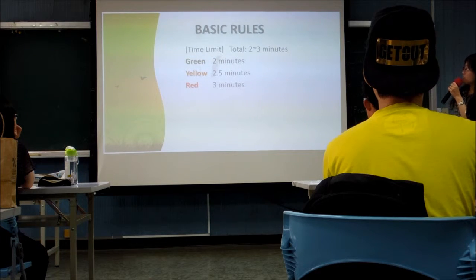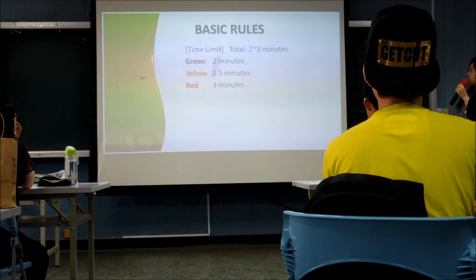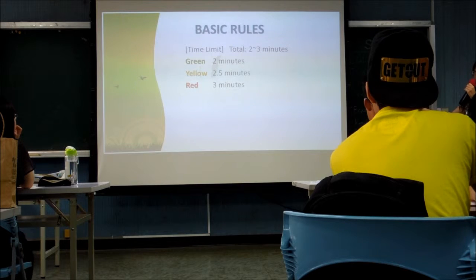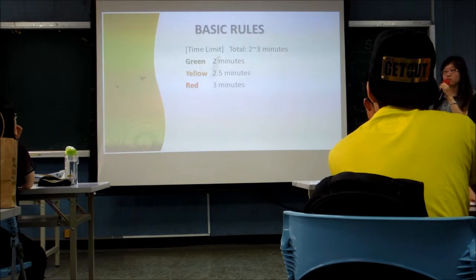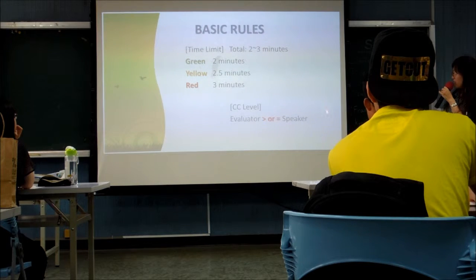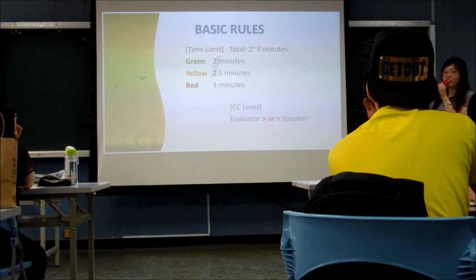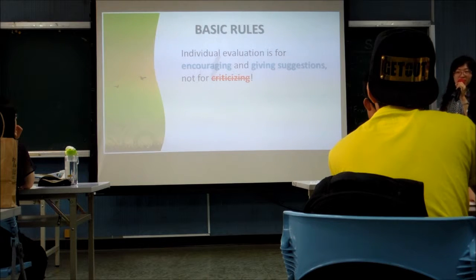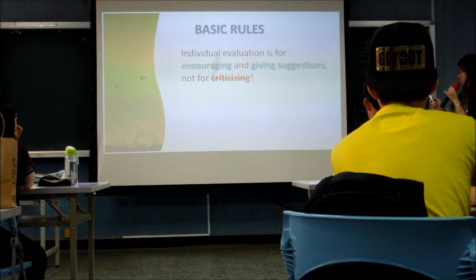Here are some basic rules. In Toastmasters, evaluation requires at least two minutes and at most 3.5 minutes. You will see the green board at two minutes, yellow at 2.5, red at three minutes. If you pass 3.5 minutes, you will be disqualified. Also, the evaluator's CC level has to be greater than or at least equal to the speaker's. And remember, individual evaluation is for encouraging, not for criticizing.